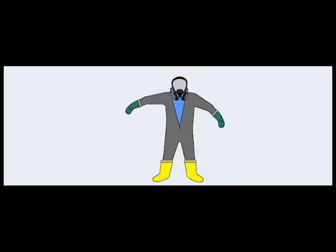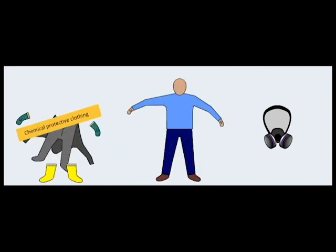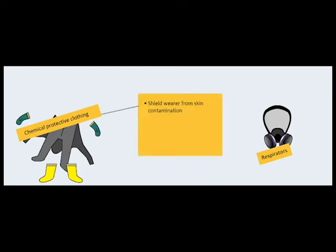PPE for hospital decontamination encompasses two major categories of gear: chemical protective clothing and respirators. Chemical protective clothing is designed to shield the wearer from skin contamination, and the respirator protects against inhaling a hazardous substance.